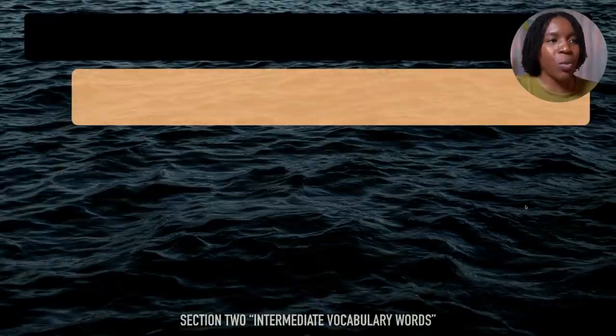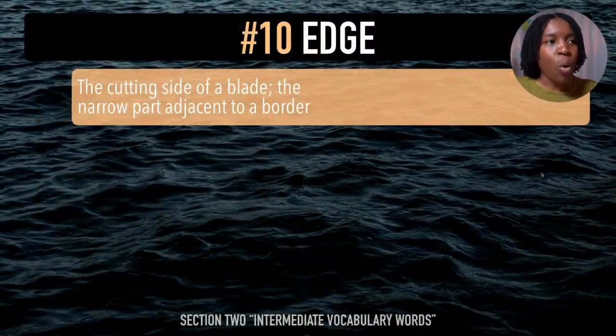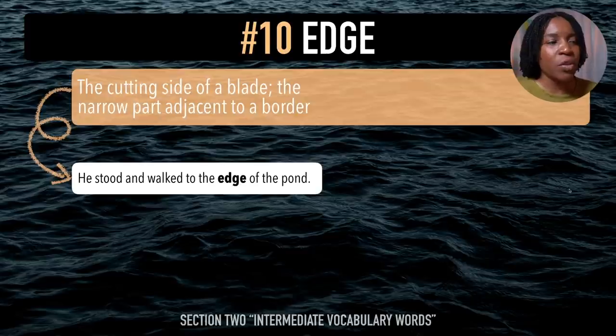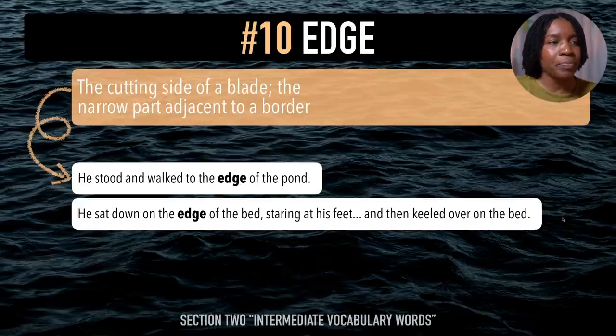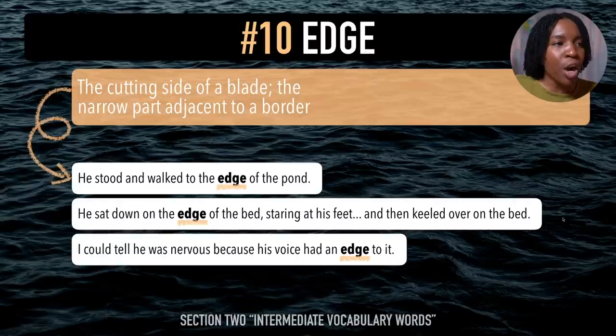The final intermediate vocabulary word is 'edge'. After me — edge. This word means the cutting side of a blade or the narrow part adjacent to a border. Example sentences: He stood and walked to the edge of the pond. He sat down on the edge of the bed, staring at his feet. I could tell he was nervous because his voice had an edge to it. Last time — edge. You've now mastered 10 intermediate vocabulary words using the 'juh' sound.